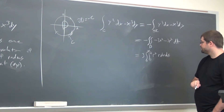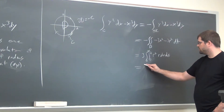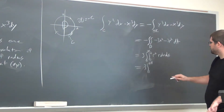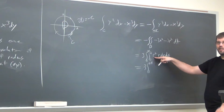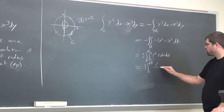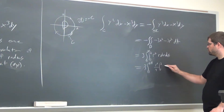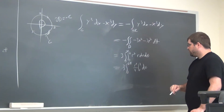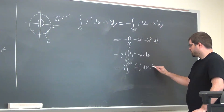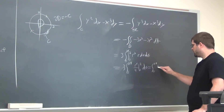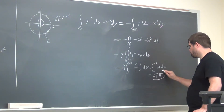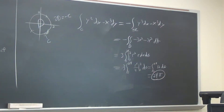This integral is easy — we get r³, so r⁴/4. Plugging in r = 2 gives 16/4 = 4. So we have 4 times 3, integrated over 0 to 2π, giving 12 dθ, which equals 24π... wait, let me check — integrating 12 from 0 to 2π gives 24π. Alright.